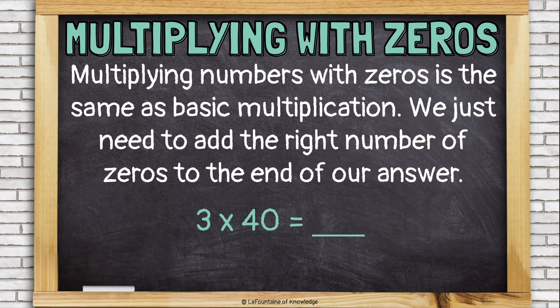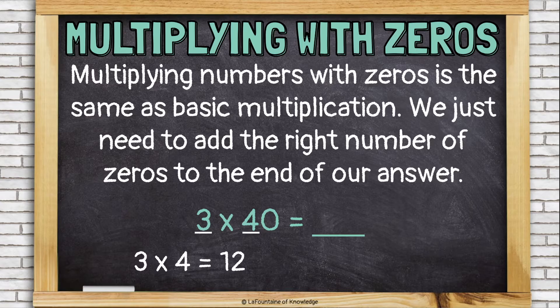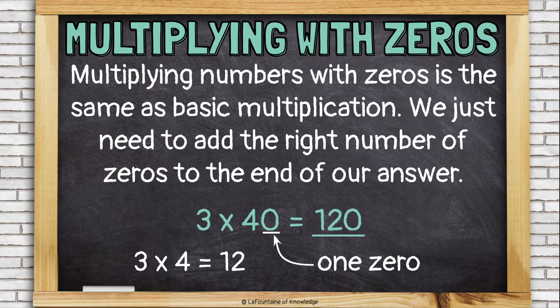Multiplying numbers with zeros is the same as basic multiplication. We just need to add the right number of zeros to the end of our answer. So when we look at 3 times 40, we multiplied 3 times 4, which is 12, and then we had one zero that we needed to add to the end of our answer to make 120.